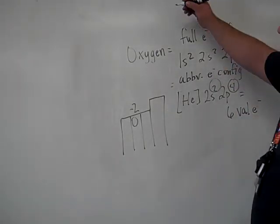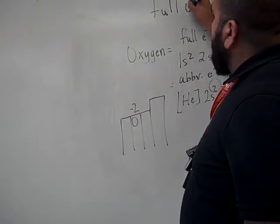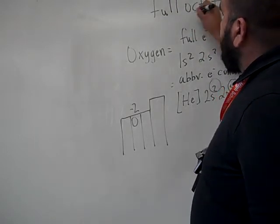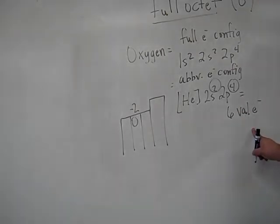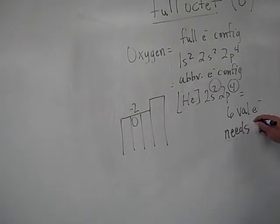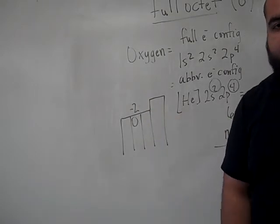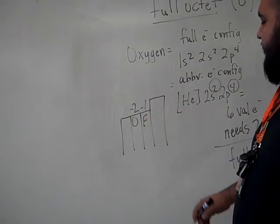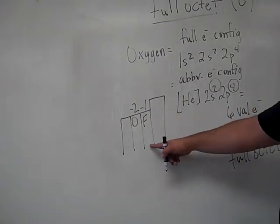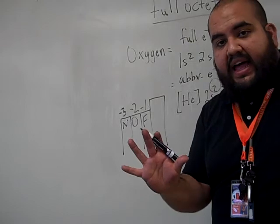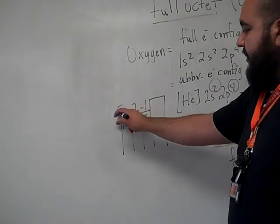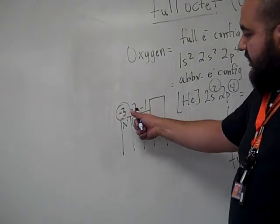Because, remember, everyone wants a full octet, meaning they all want 8 electrons. Oxygen only has 6, needs 2 electrons to have a full octet. And that's why we put the charge of minus 2. Fluorine is at a minus 1 because fluorine is going to have 7 valence electrons and it needs 1. Nitrogen is going to be at a minus 3 because it has 5 valence electrons, but it needs 3. Again, these are called oxidation states.